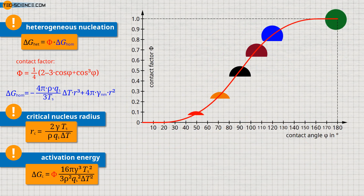The diagram shows the course of the contact factor with increasing contact angle. Small contact angles — meaning strong wetting — result in very small contact factors. For a contact angle of 30 degrees, for example, the contact factor is only about 0.01, meaning the activation energy required for heterogeneous nucleation is only 1% of that for homogeneous nucleation. The critical nucleation volume is also greatly reduced by a small contact angle, requiring fewer atoms for nucleation. Heterogeneous nucleation is therefore much more likely in metal melts than homogeneous nucleation.